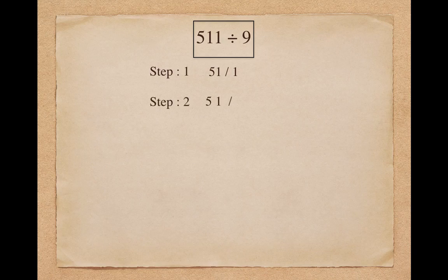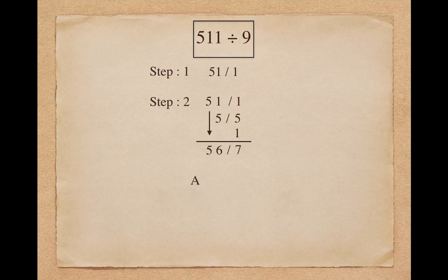To find the first digit of the quotient, put 5 as it is. To find the second digit of the quotient, make the summation of all the previous digits of the dividend, so 1 plus 5 makes 6. To find the remainder, make the summation of all the digits of the dividend, so 1 plus 5 plus 1 makes 7. So here the answer is quotient 56 and remainder 7.